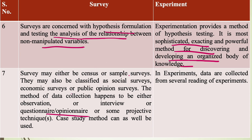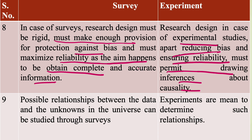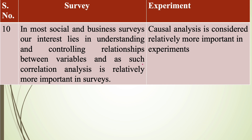Surveys may be census surveys or sample surveys related to public opinion; experiments involve data collection through several readings of experiments. In survey research design must be rigid and protected against bias, whereas in experimental studies, apart from reducing bias and ensuring reliability, it draws inferences about causality. In surveys, possible relationships between data and unknowns in the universe can be studied, but in experiments those relationships are determined. In most social and business surveys, interest lies in understanding and controlling relationships between variables through correlation analysis, but in experiments causal analysis is considered more important.